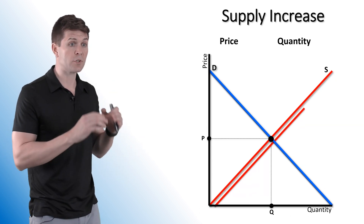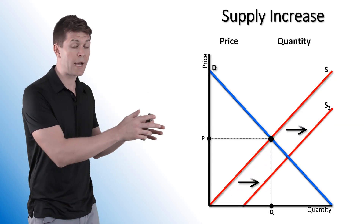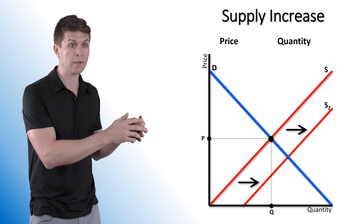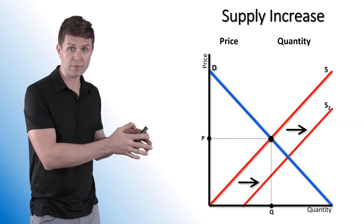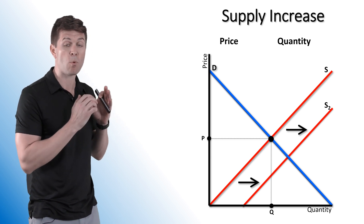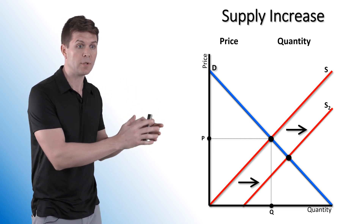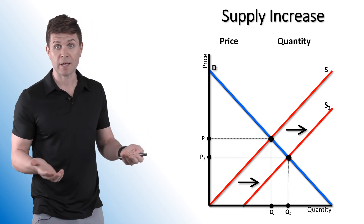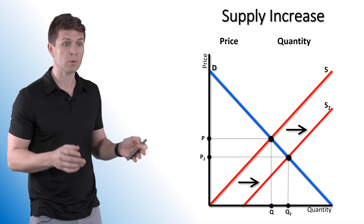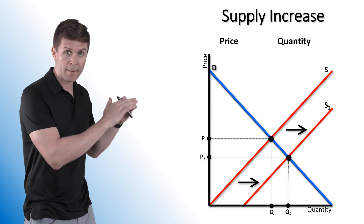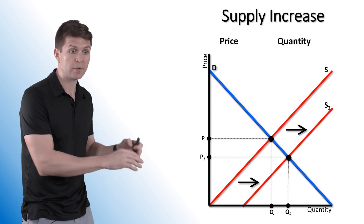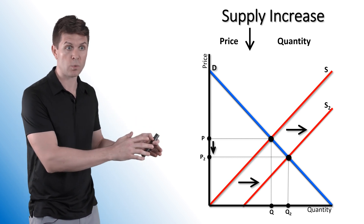An increase in supply is going to shift our supply curve to the right. This increase in supply means that more is going to be produced at every price level, and we are going to establish a new equilibrium — dropping price down and increasing quantity.